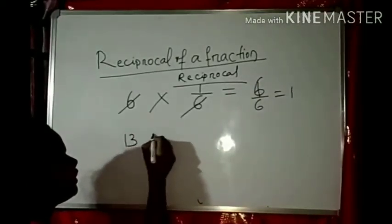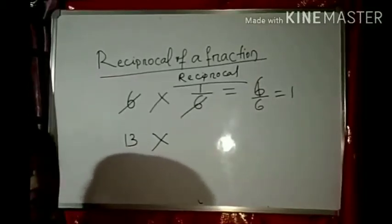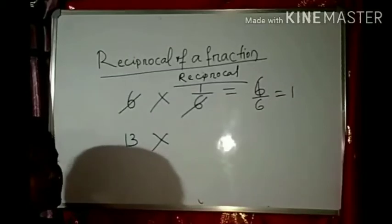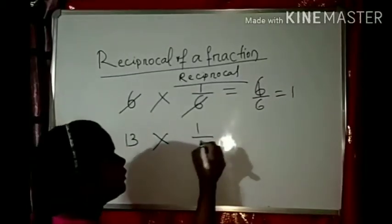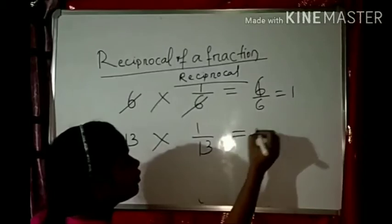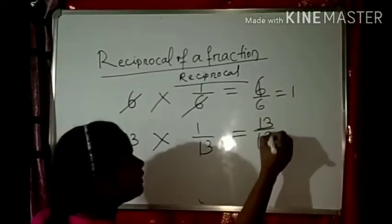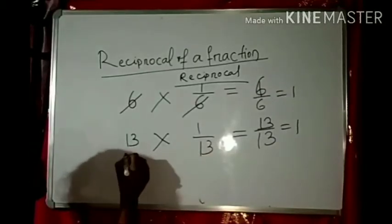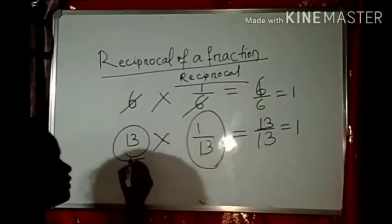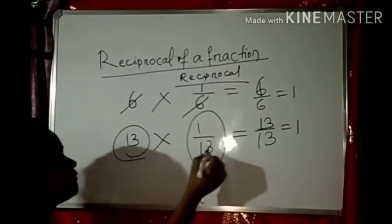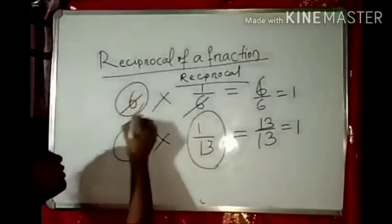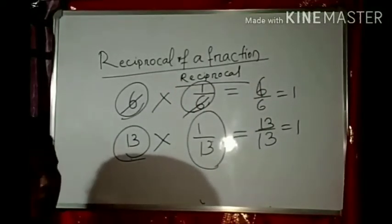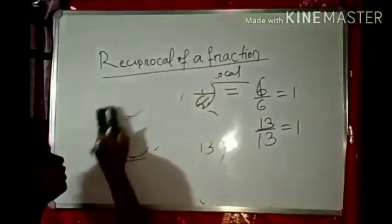They have to be non-zero numbers. If they are zero, there won't be any reciprocal. So 13 into 1 by 13 equals 13 by 13, which equals 1. The reciprocal of 13 is 1 by 13, and the reciprocal of 6 is 1 by 6. This is the reciprocal of whole numbers.